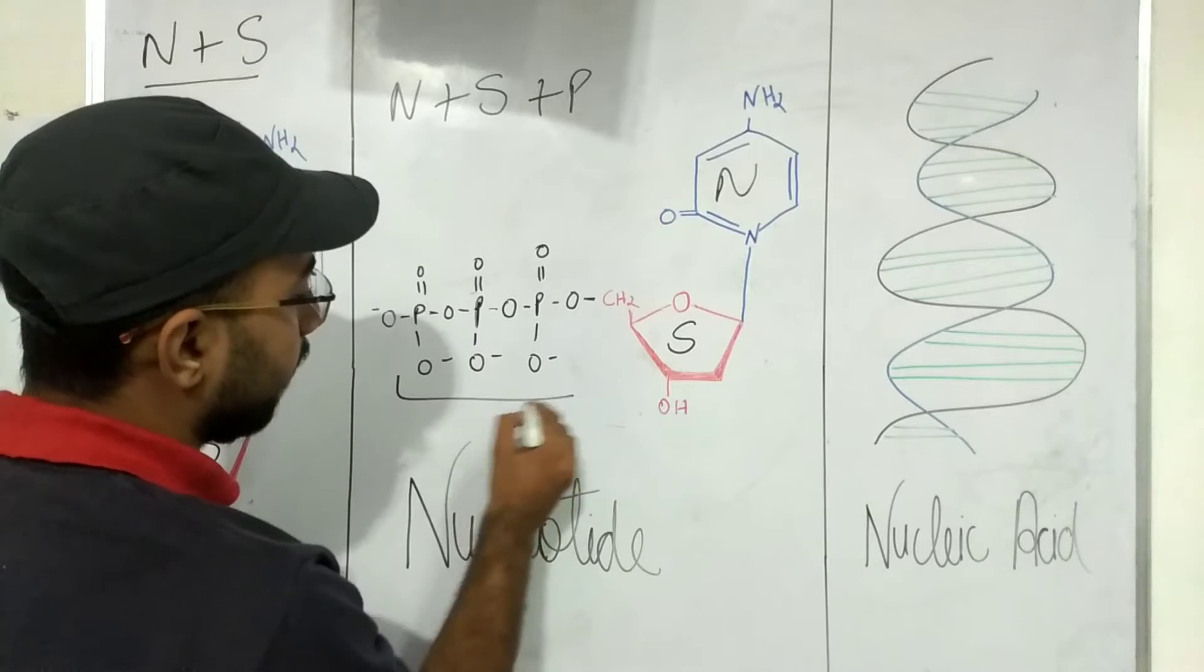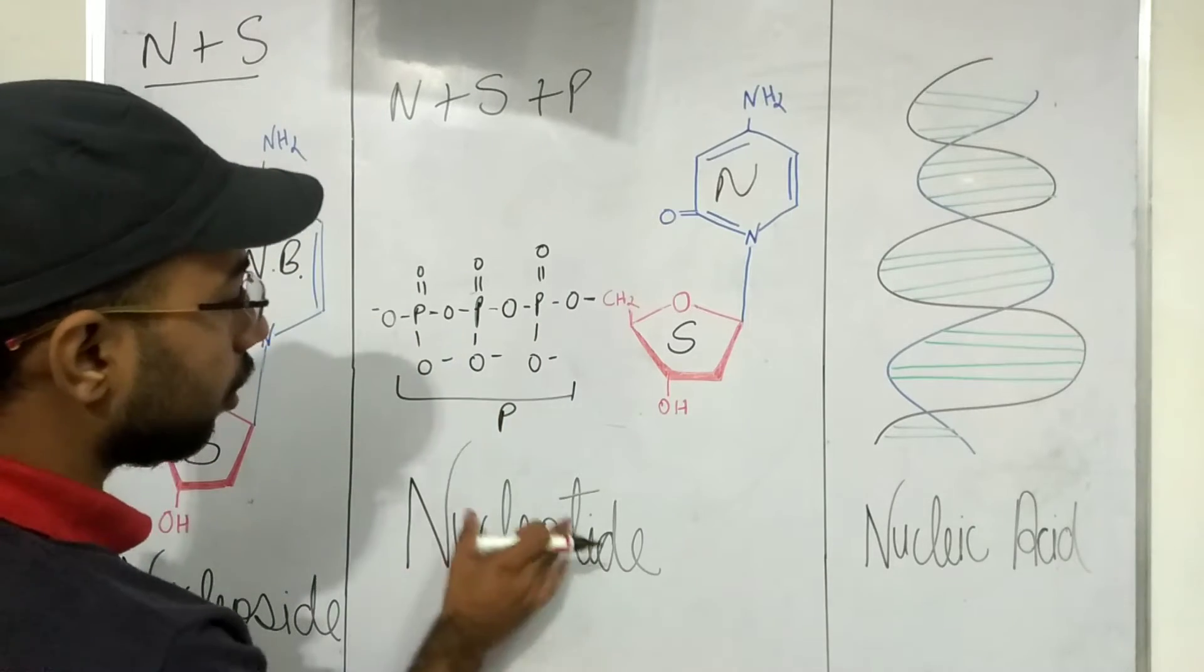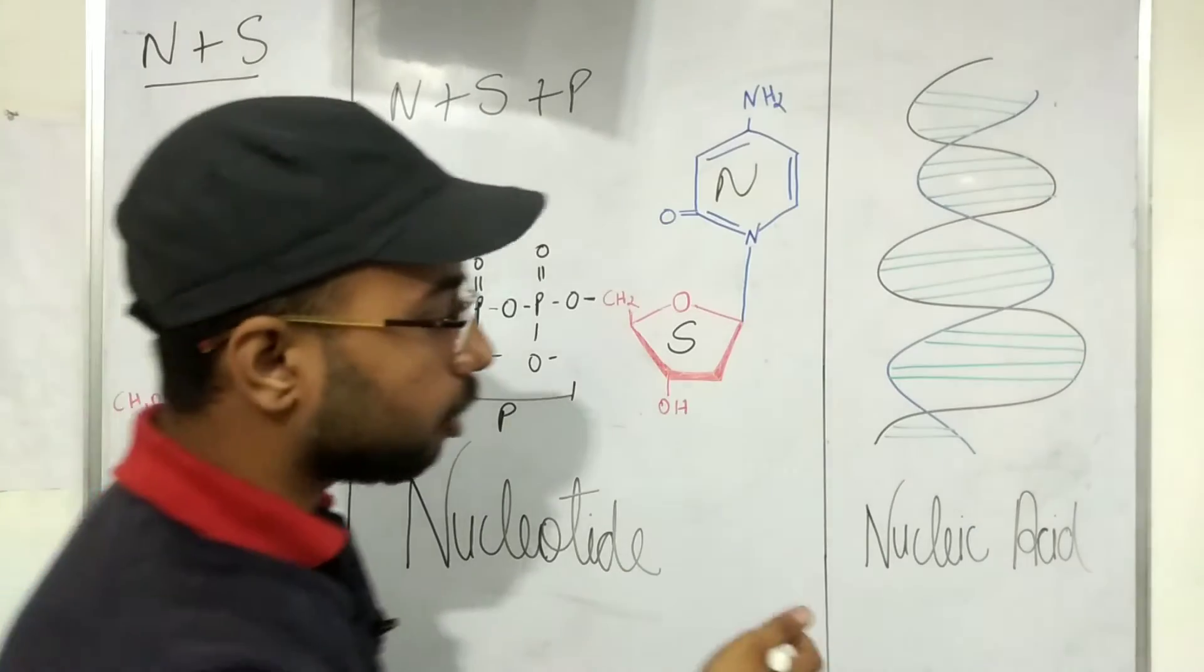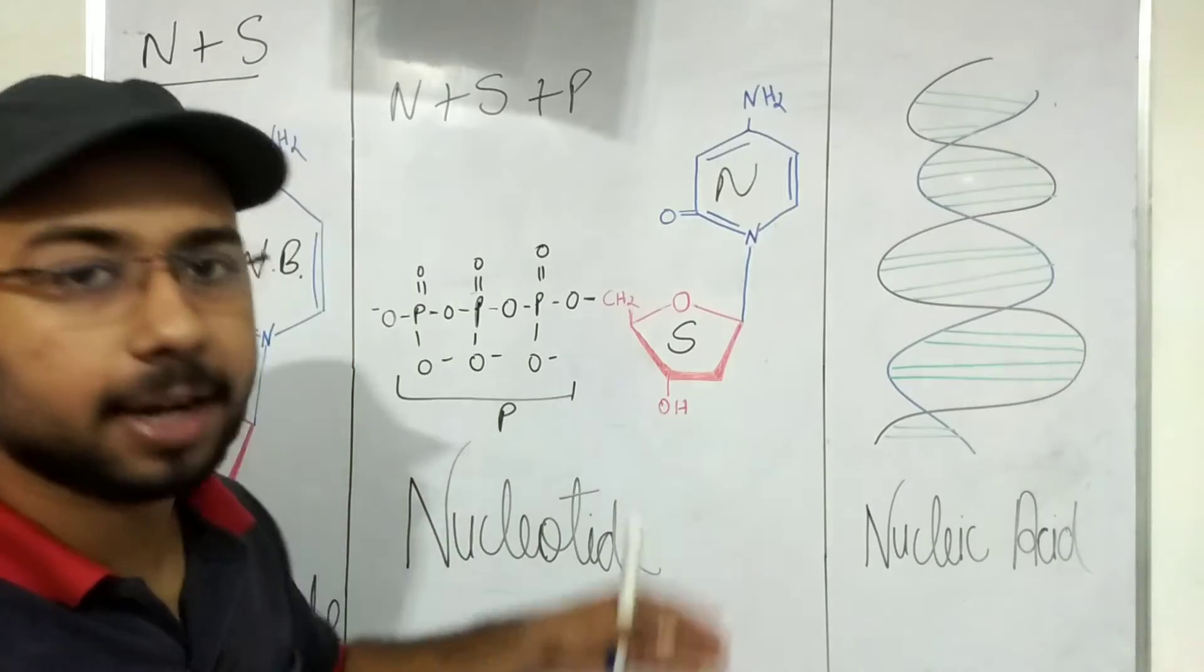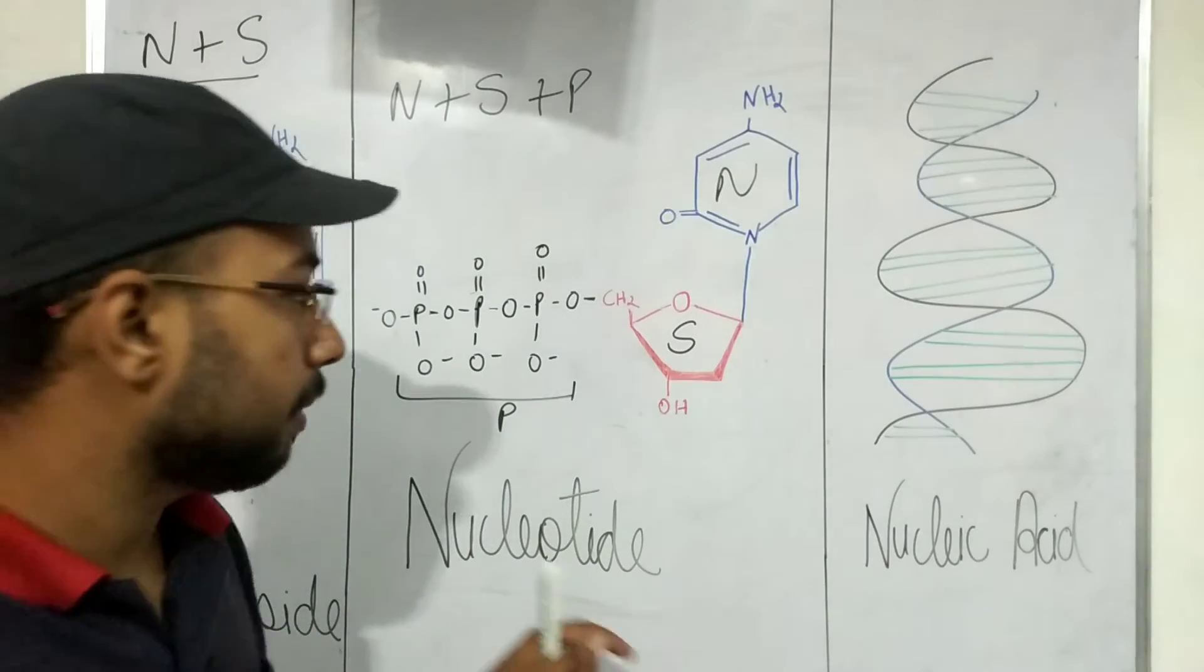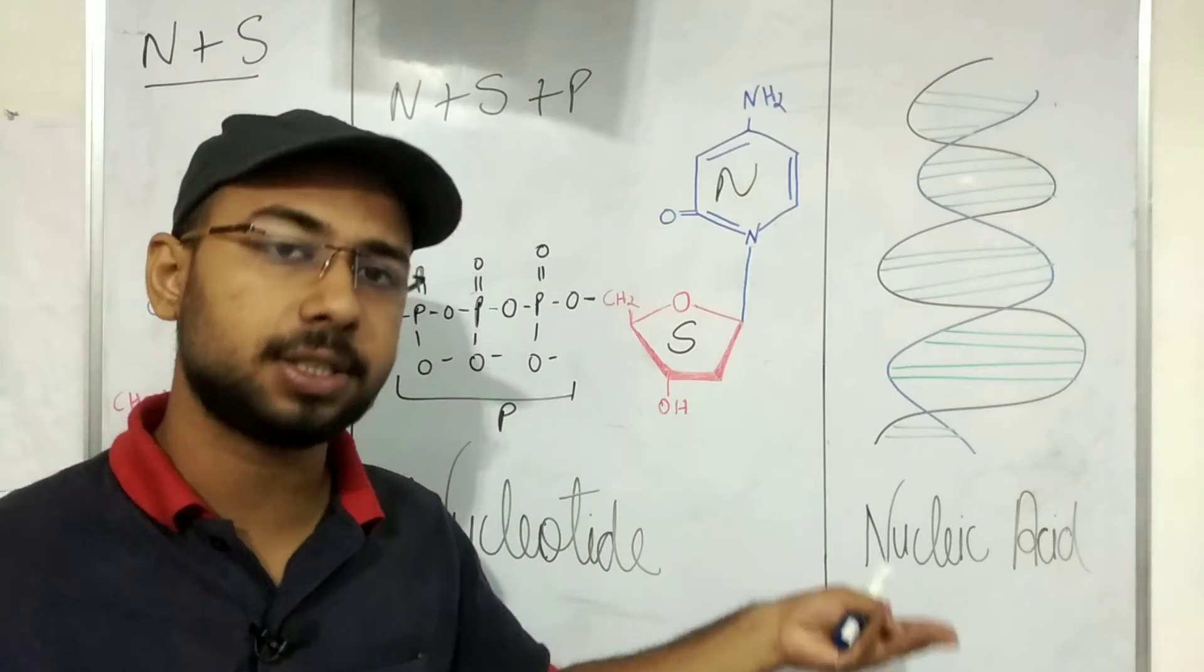That contains nitrogen base plus sugar plus phosphate group. Okay, it contains nitrogen base, sugar, and phosphate groups. There are three groups here in the nucleotide. While talking about the nucleic acid, what is nucleic acid?